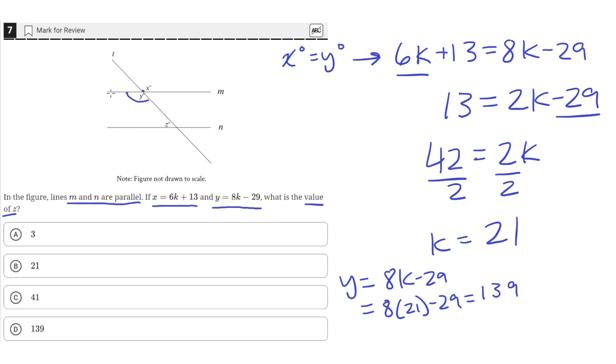Because this is two parallel lines that are being intersected by this transversal, we know that corresponding angles are equivalent.